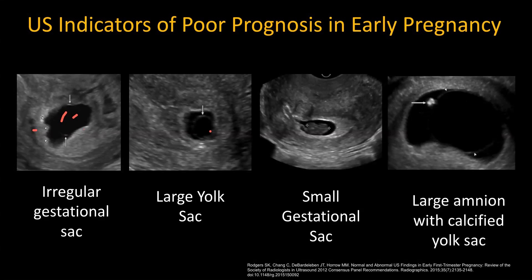A large yolk sac is another sign. If you look at this yolk sac compared to the gestational sac, it's fairly large. The yolk sac in early pregnancy is normally less than 5 millimeters. If you see a yolk sac which is more than 7 to 8 millimeters, that is a sign of poor prognosis.